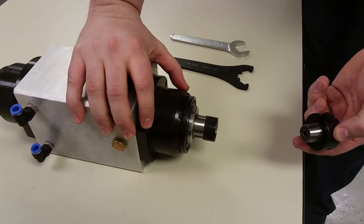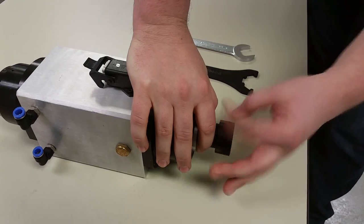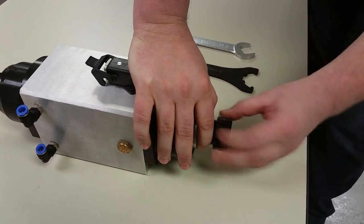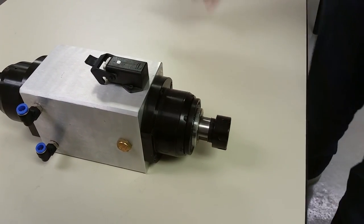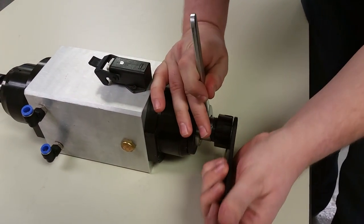This here is a standard ER25 collet. You would normally take your collet nut off. You'd have a new collet in here with a new tool. To tighten this down, you'd hand tighten it and you'd get your wrenches.